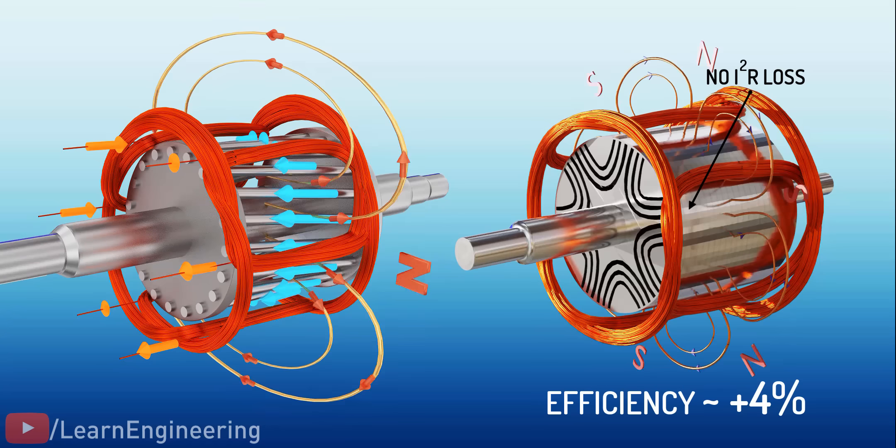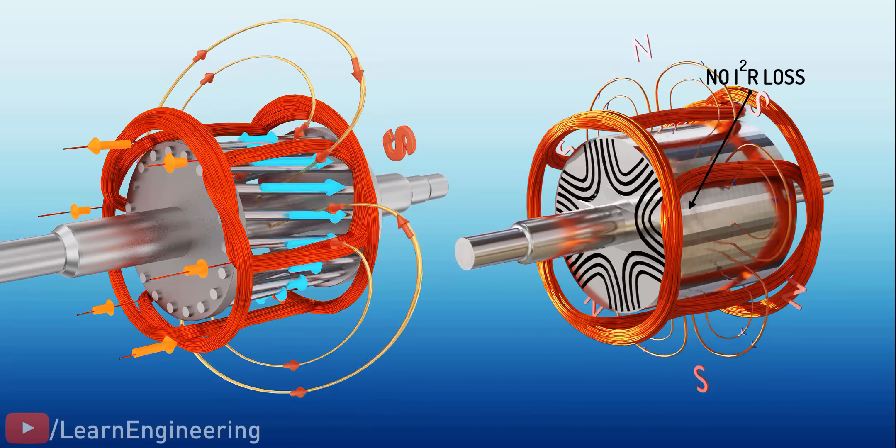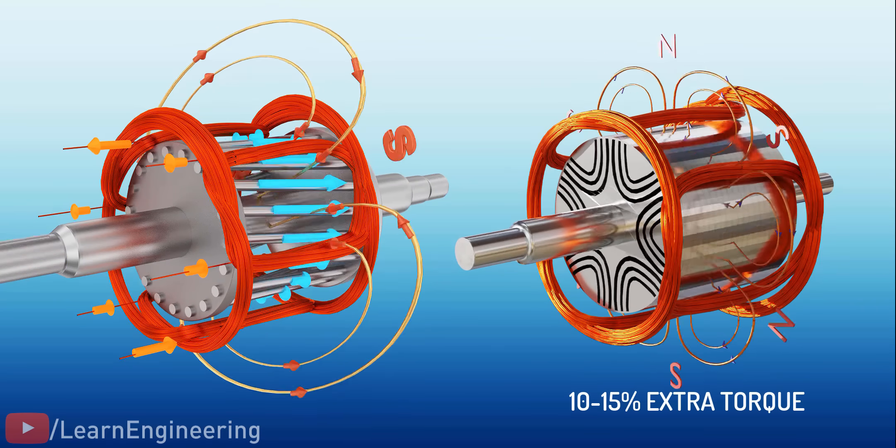Due to the absence of I-squared R loss in SynRMs, they run cooler. For the same current input, SynRMs are able to produce 10-15% greater torque than induction motors.